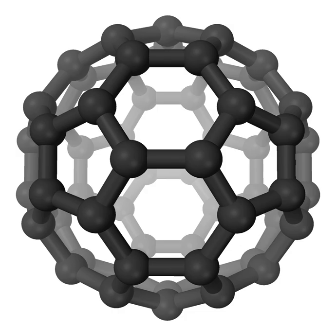The hexatriynyl radical, C6H, is an organic radical molecule consisting of a chain of six carbon atoms terminated by a hydrogen. The unpaired electron is located at the opposite end to the hydrogen atom, as indicated. Both experimental work and computer simulations on this species were done in the early 1990s.